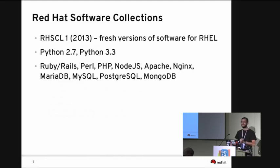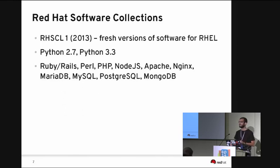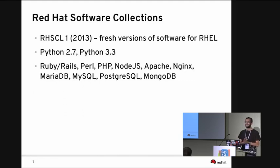For Red Hat Enterprise Linux, we have a product called Red Hat Software Collections. We first released it last year, and it basically brings fresh versions of various useful developer and sysadmin tools on top of RHEL 6, and now also on top of RHEL 7. Most interesting here is that we have Python 2.7 and Python 3.3. People from the community have been coming to me saying Red Hat is the only thing preventing them from moving to Python 3 — well, now I can do something about it, and I did, and it works great.